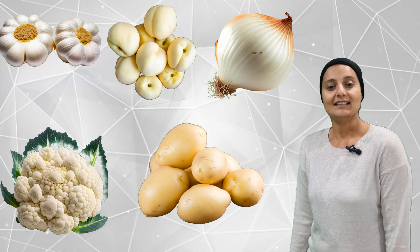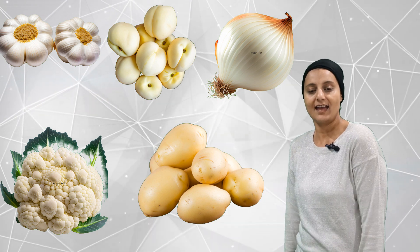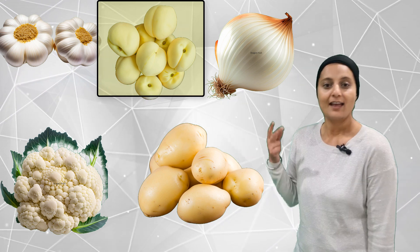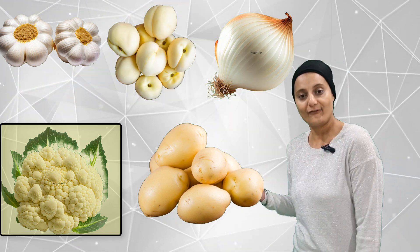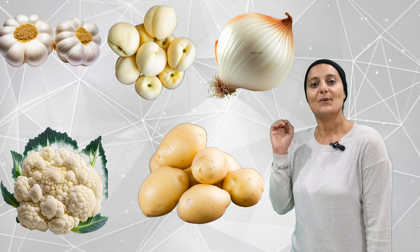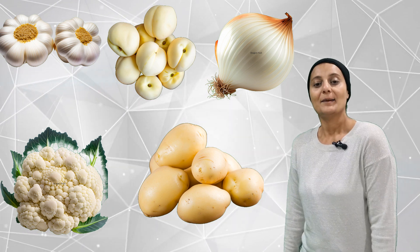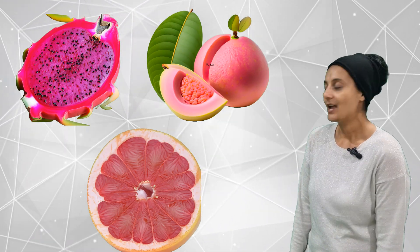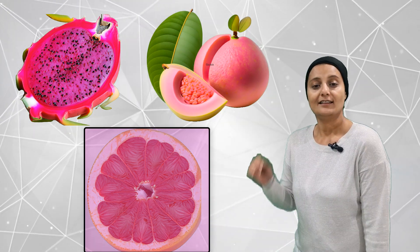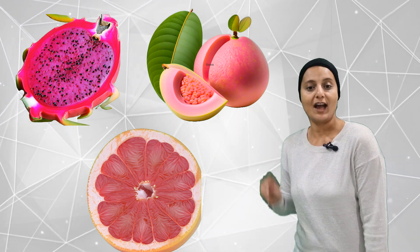Let's see how many white fruits and veggies we can count. 1, 2, 3, 4, 5. Five white fruits and veggies. Pink: 1, 2, 3. Three fruits and veggies which are pink.